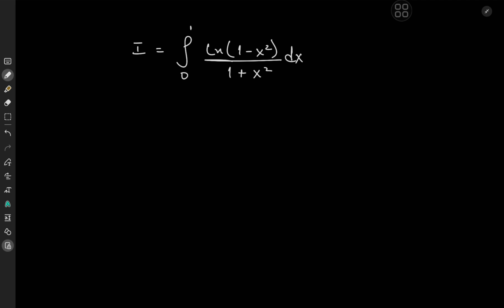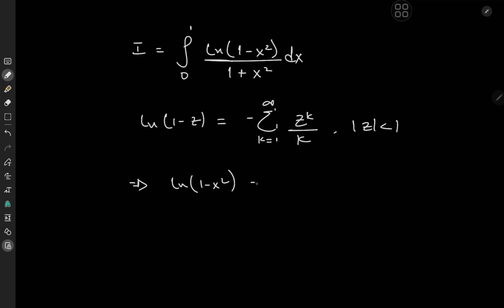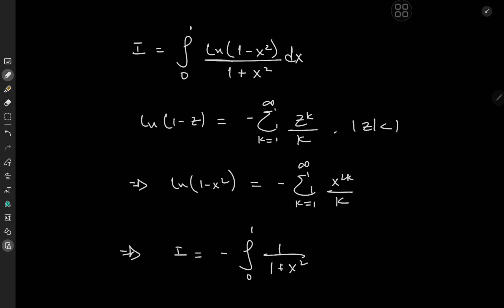We'll start off with the series expansion for log(1 minus z), which is negative sum over k from 1 to infinity of z to the k over k, provided that the absolute value of z is less than 1. This is clearly satisfied for z equal to x squared on our interval of integration. So this implies that log(1 minus x squared) equals negative sum over k from 1 to infinity of x to the 2k over k.